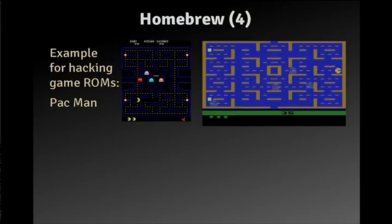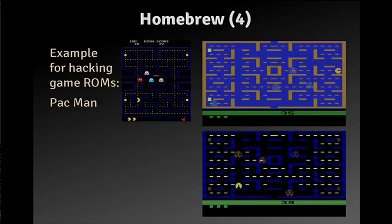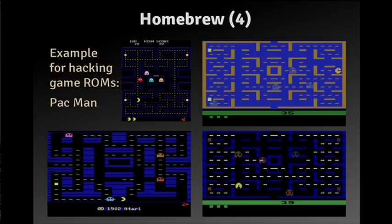This is what Pac-Man looks like in the arcade, and this is what Pac-Man looked like at home. The homebrew community thought they could do better. They improved the colors and made the sprites look nicer. But they even took another step: they took the ROM image of Ms. Pac-Man — the successor — put the original image back in, added intermediate cutscenes and everything. It's really close to the original arcade version.